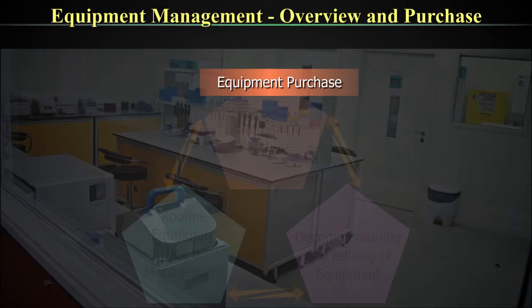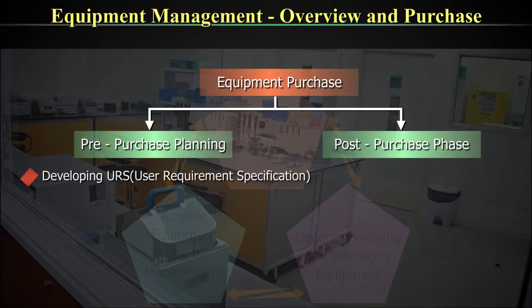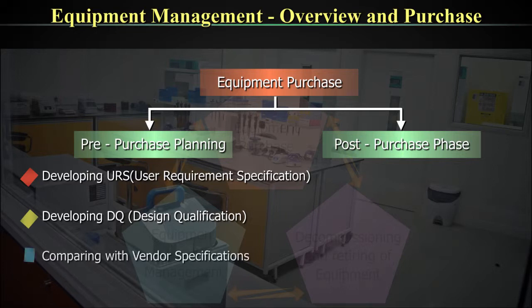Let's look at equipment purchase. This is only a brief expansion. The first part of the equipment purchase overview covers pre-purchase planning and a post-purchase phase, to be discussed in detail later. Pre-purchase planning involves development of a URS — a user requirement specification — design qualification (DQ), and comparing with vendor specifications.